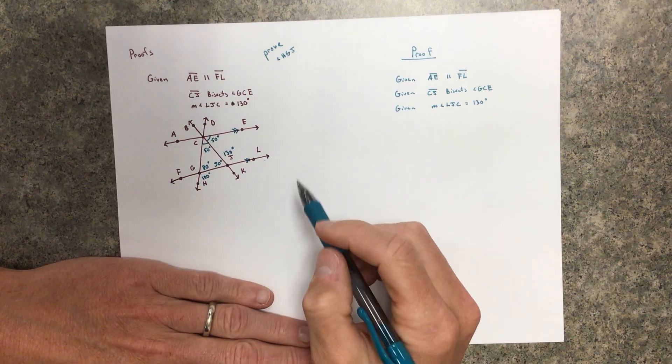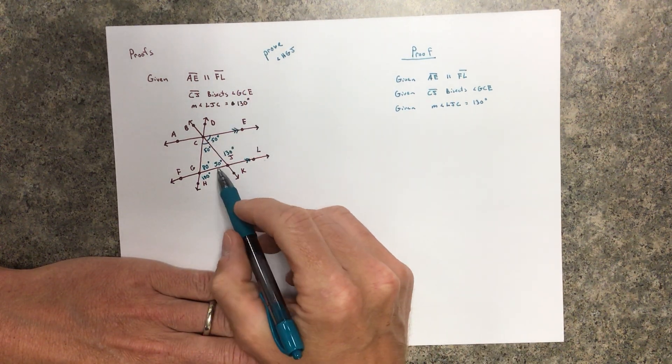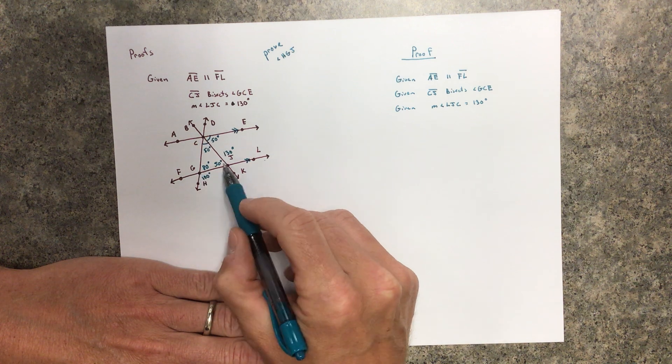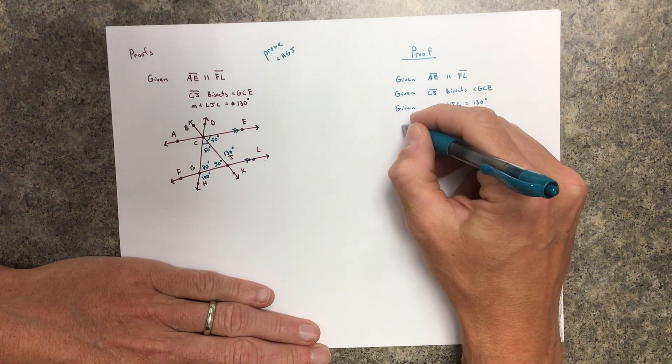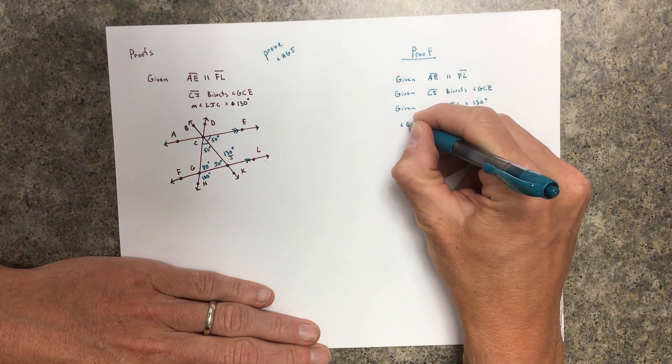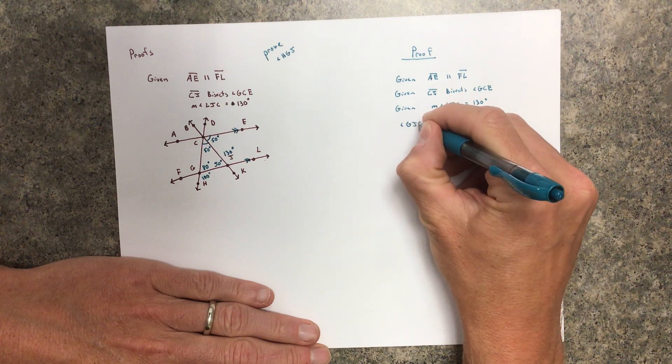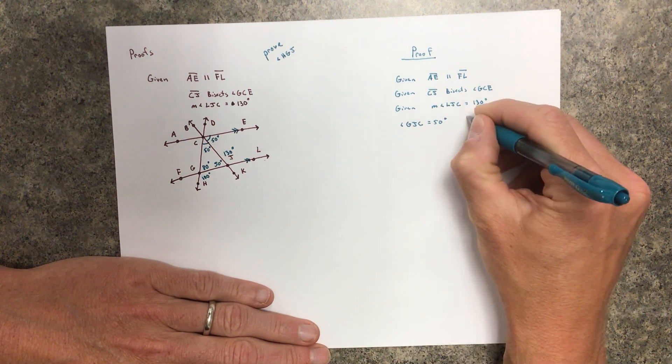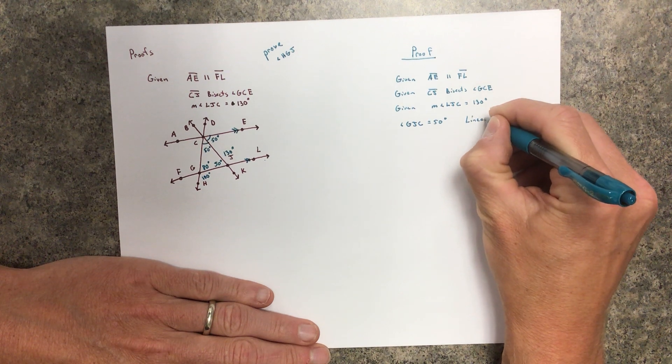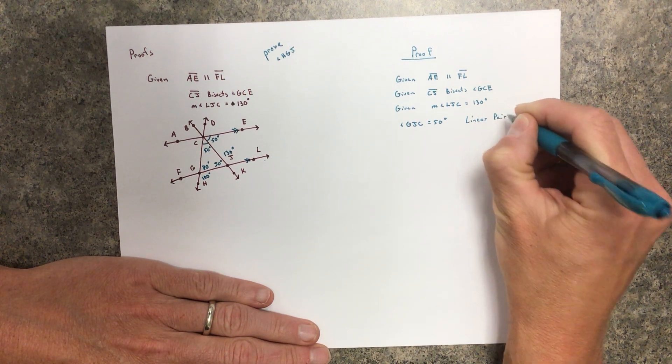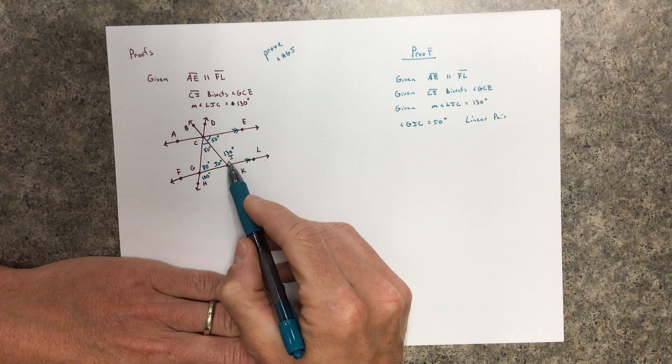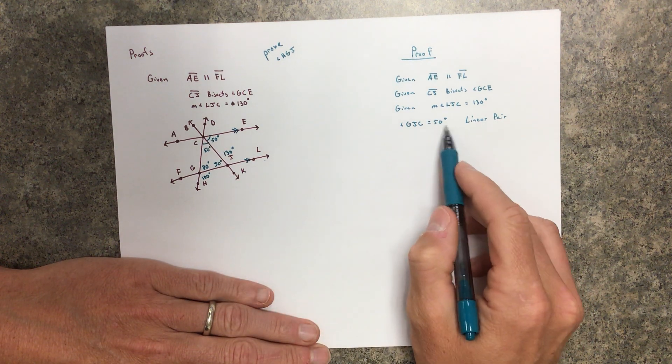Now trace back what we said. We now know that this angle, angle GJC, is 50 degrees. Why? Because it's a linear pair. This and this are a linear pair, and we know linear pairs are supplements.